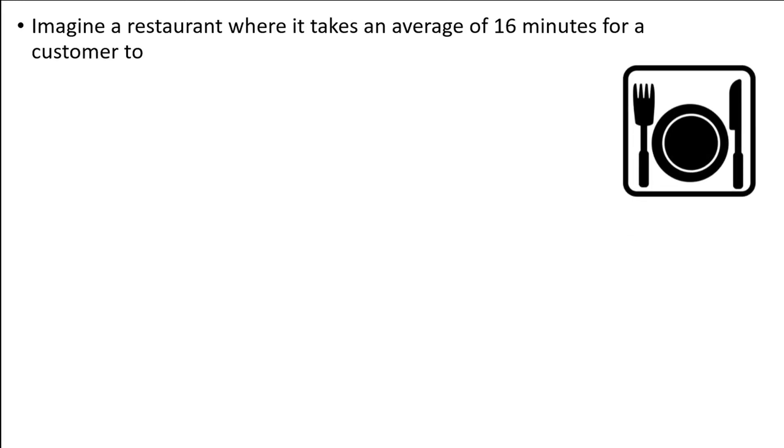Imagine a restaurant where it takes an average of 16 minutes for a customer to be served their food with a standard deviation of 6.35 minutes. We only know the mean and standard deviation of the wait times and aren't sure of the shape of the distribution.